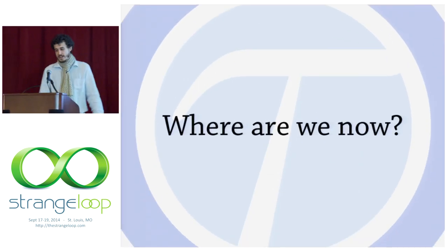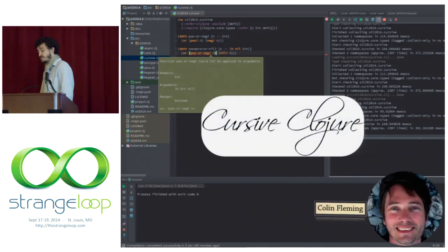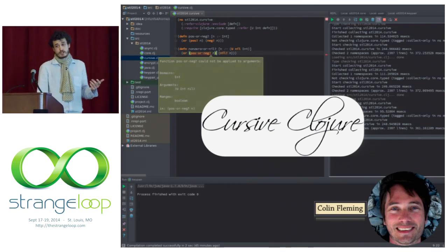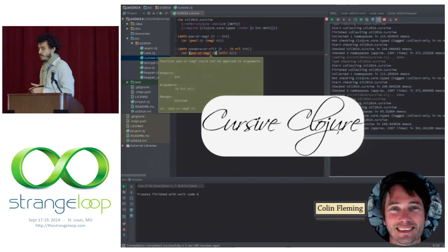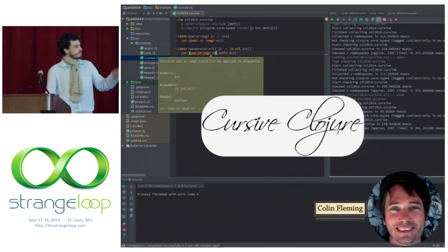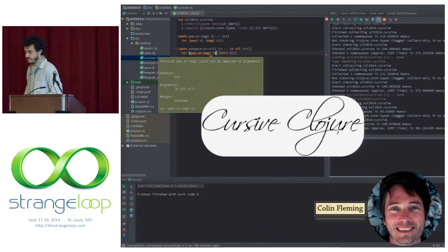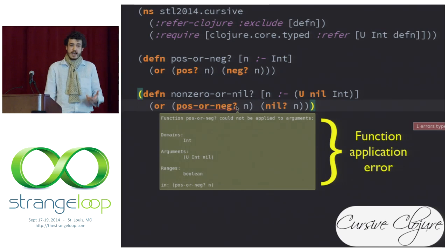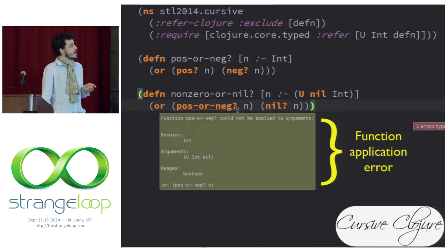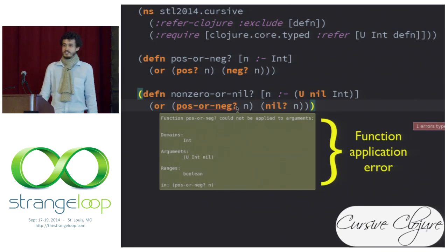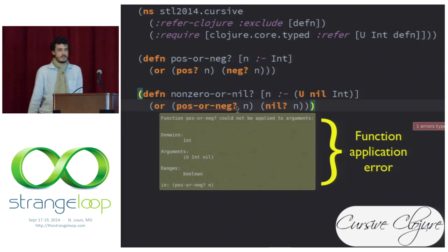Something exciting happening in the Closure world is this IDE called Cursive Closure. If you haven't used it or if you're new to Closure, I highly recommend trying it out — I know people who have dropped Emacs and Vim for it. Colin Fleming is presenting it at Clojure/conj this year. He's added support for type closure in the IDE, and here's one example of the function application error style, where mousing over the red squiggly lines shows the error.